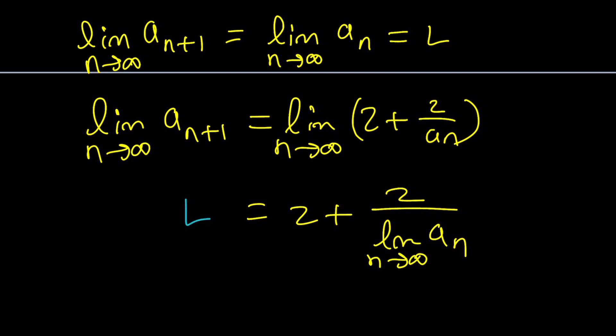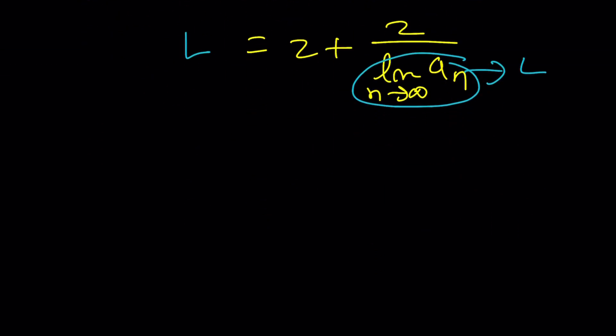So, now we can replace this with L. And we can replace this with L. And when you evaluate this expression, you're going to get the exact same thing. Of course, you're going to get two values, but 1 minus root 3 cannot be accepted. So, the answer is supposed to be 1 plus root 3.